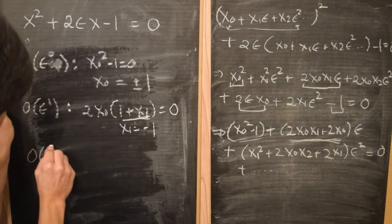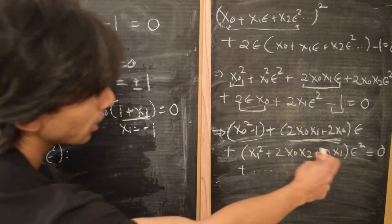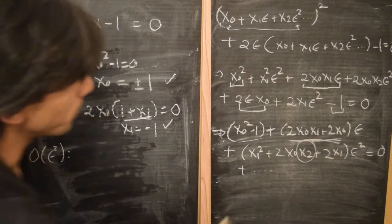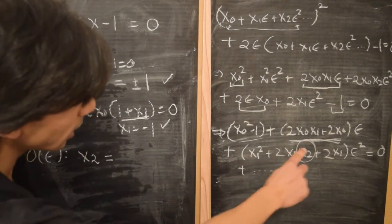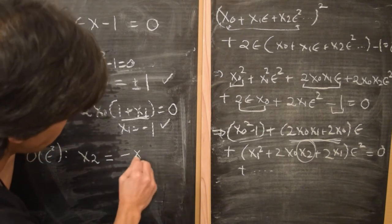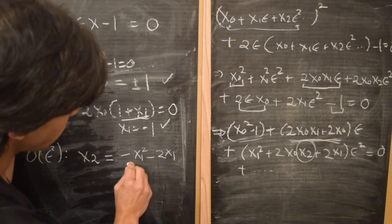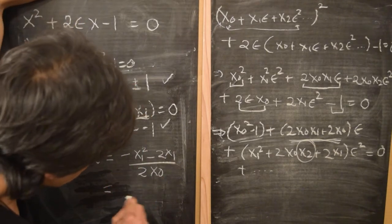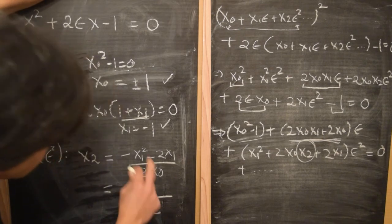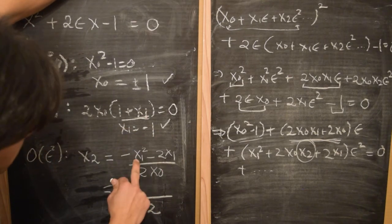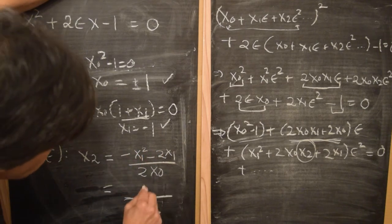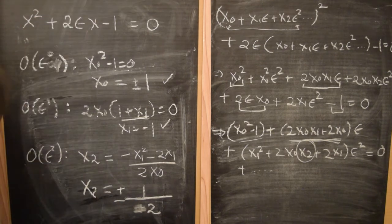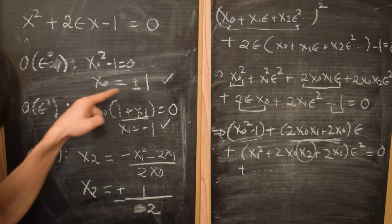The third coefficient is obtained by equating the coefficient of the epsilon squared term to zero. We already know x₀ from the first step and x₁ from the second step, and all we have to do is find x₂. By equating this to zero, we find that x₂ will be minus x₁ squared minus 2x₁, divided by 2x₀ — and again x₀ is non-zero so we can divide by 2x₀. So x₀ is either plus or minus one, so the denominator is plus or minus two. x₁ is minus one, so minus one squared is one, giving minus one plus two, which is one. So x₂ is plus or minus half — when x₀ is plus one, x₂ is plus half, and when x₀ is minus one, x₂ is minus half.